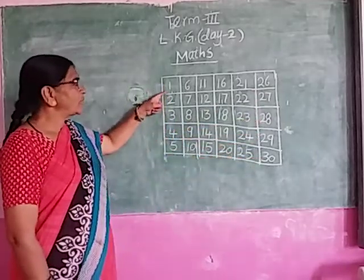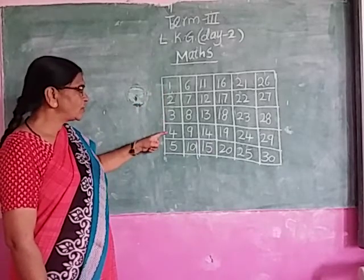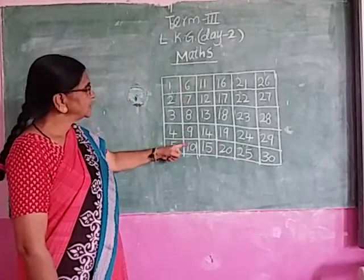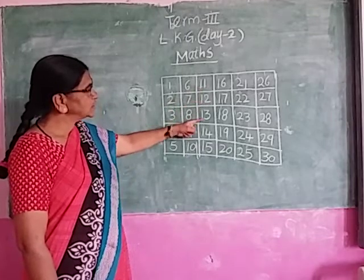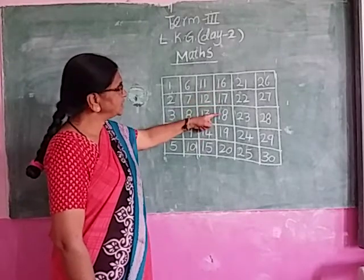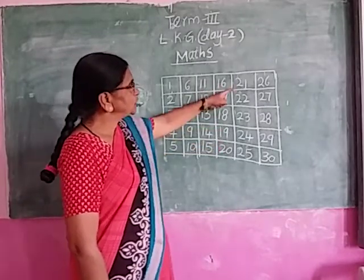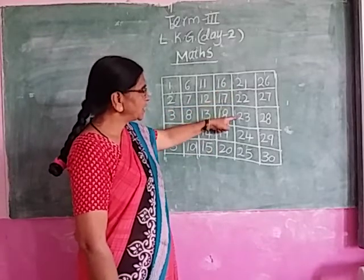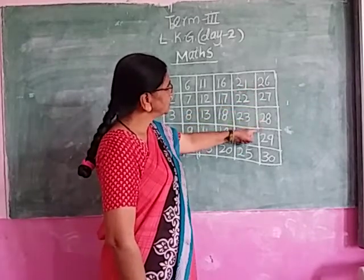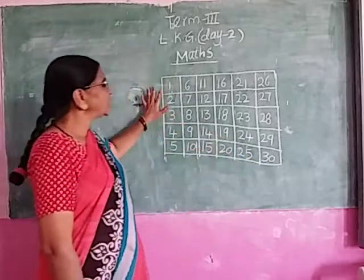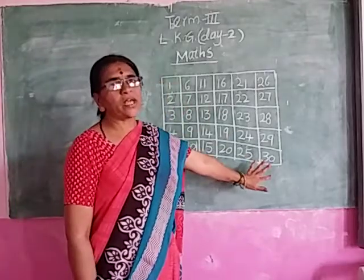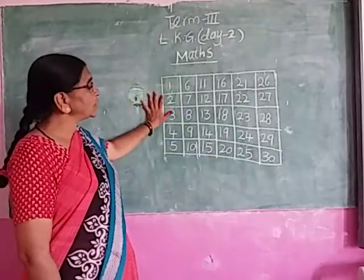Can I say one more time? 1, 2, 3, 4, 5, 6, 7, 8, 9, 10, 11, 12, 13, 14, 15, 16, 17, 18, 19, 20, 21, 22, 23, 24, 25, 26, 27, 28, 29, 30. We write numbers 1 to 30. We also practice the numbers 1 to 30. Write the numbers 1 to 30, and 20 and 30 also.